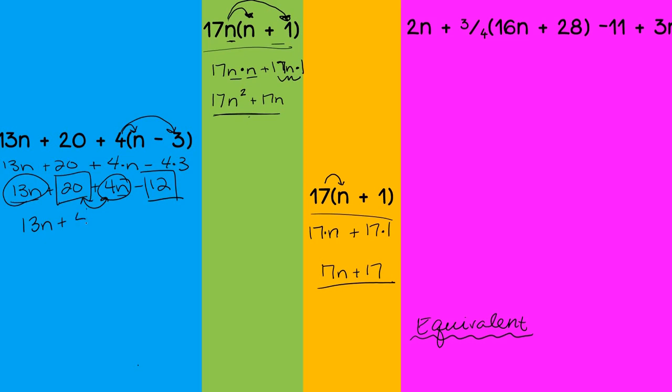So you can kind of see a little bit better how this is working. I can switch these two because of the fact that it's addition right there. So I can make this 13n plus 4n plus 20 minus 12. So now I can see that these two can combine to make 17n. And then here, I'm going to do 20 minus 12. And 20 minus 12 is 8.